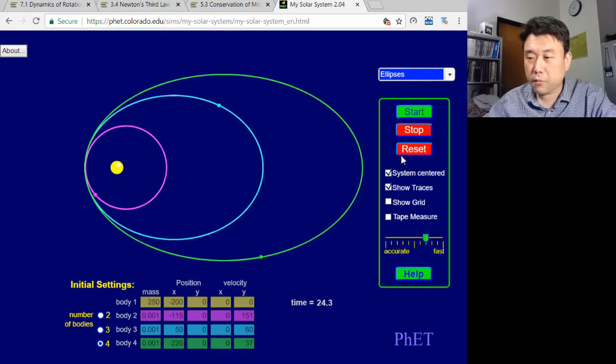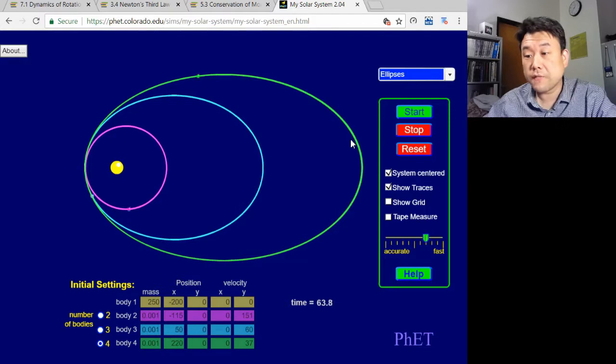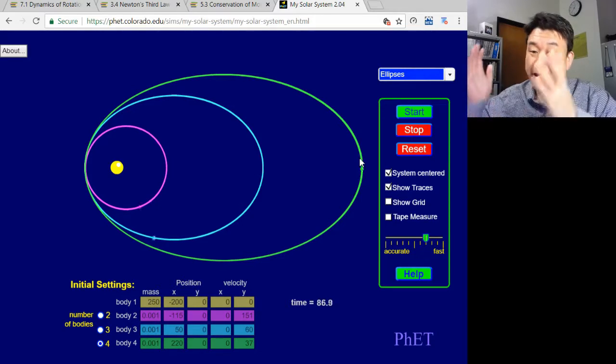But when the comets slow down, how can we say angular momentum is constant? Well, angular momentum is rotational inertia times angular velocity. So when the comet gets farther away, its rotational inertia is increasing. So if its angular velocity decreases in just the right way as this radial distance increases, then the angular momentum of the comet will be conserved. And that's what happens.